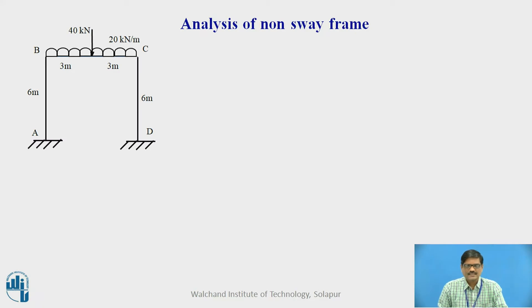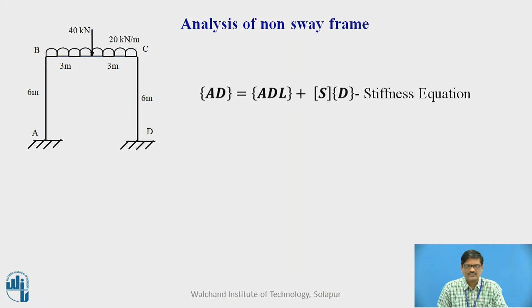Let us consider one frame subjected to a loading as shown in the figure. It is a non-sway frame since we have perfect symmetry about the support — perfect symmetry of loading and geometry. Therefore, this is a non-sway frame.